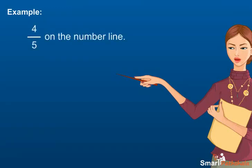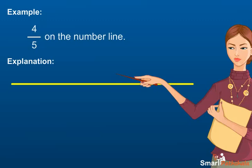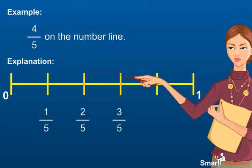Example: Draw four upon five on the number line. Explanation: Step one: Draw a straight line, mark zero and one on it. Step two: Since the denominator is five, divide the gap between zero and one into five equal parts. Step three: Mark the points as one upon five, two upon five, three upon five, and four upon five. Thus we get the point four upon five on the number line.